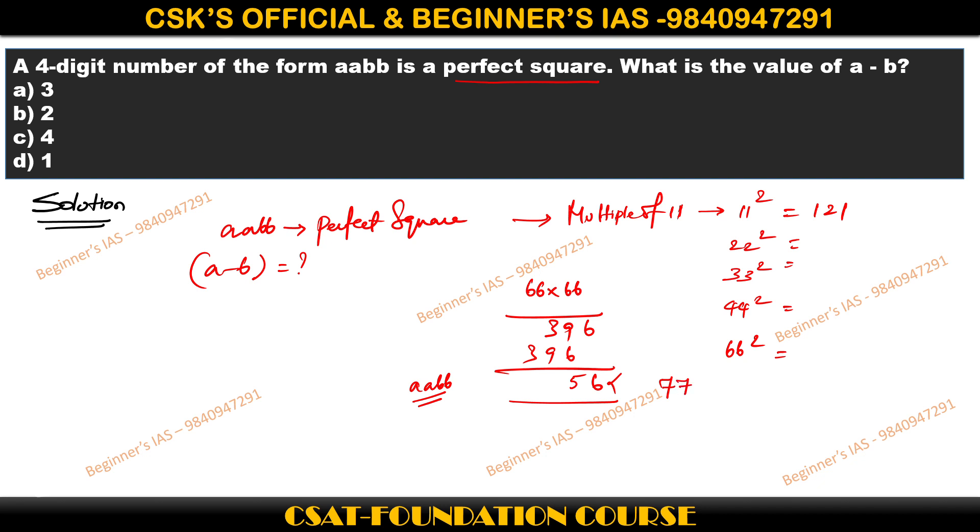77, which is 11 into 7, the square of the 11 table. Therefore 77 into 7 is 49, 4, then 49, then 53, then here 9, 3, 5. Here this is also not the case, since bb is not there. The units and the tenth place are not the same.